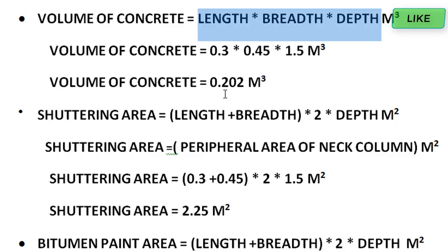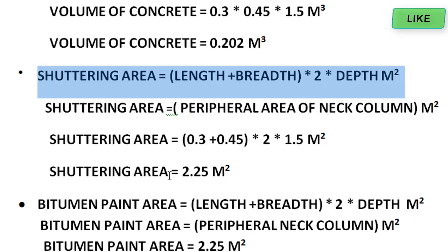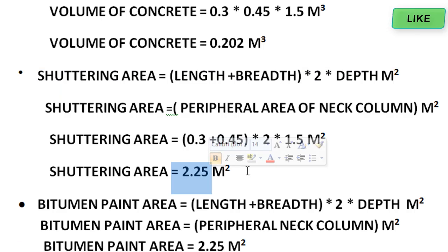Now we calculate the shuttering area. The shuttering area formula is (length plus breadth) into 2 into depth, in square meters. This formula gives the peripheral area of the neck column. Substituting values: (0.3 plus 0.45) into 2 into 1.5. The shuttering area is 2.25 square meters.